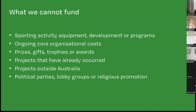What we can't fund includes sporting activities and equipment and developmental programs, as these aren't charitable under the Australian Taxation Office. We ask sporting organisations to consider projects with broad community benefit rather than just advancing the sport. We can't fund ongoing core organisational costs, however we can fund project-specific wages or salaries. Things like prizes, gifts, trophies or awards aren't eligible — consider local businesses or other sources for those.